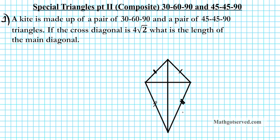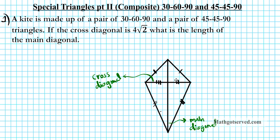Now, this segment here is the main diagonal and this segment here is your cross diagonal. We know that the main diagonal bisects the cross diagonal, so we can indicate that this side of the segment is congruent to that segment.